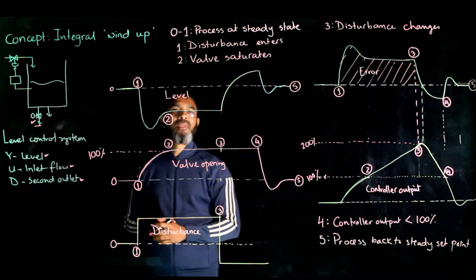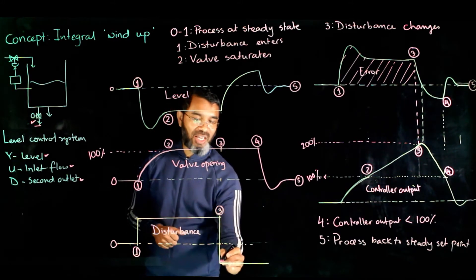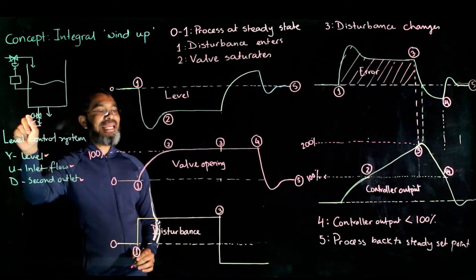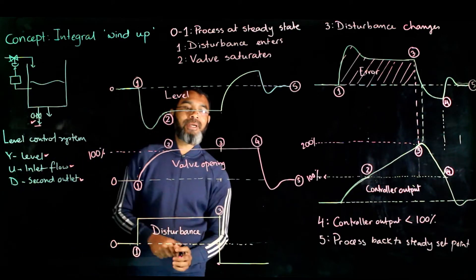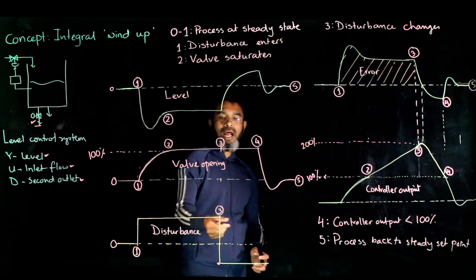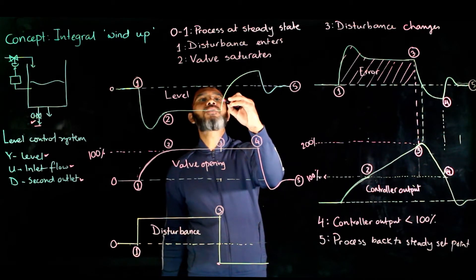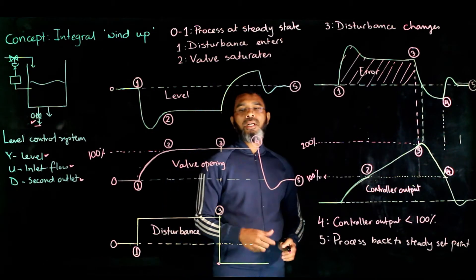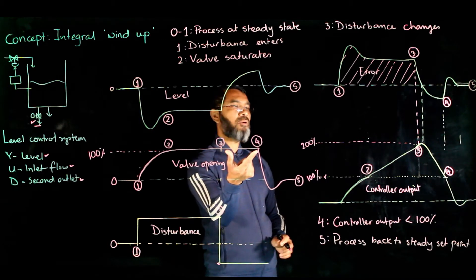At instant 3, the disturbance changes again — the outlet flow is reduced. Because of this, the output starts to increase and goes beyond the set point value. However, the controller is not taking any corrective action — the controller action remains unchanged. Why is this?